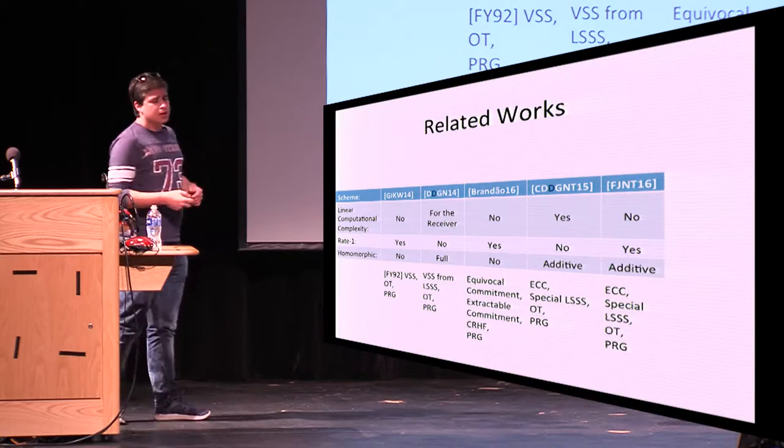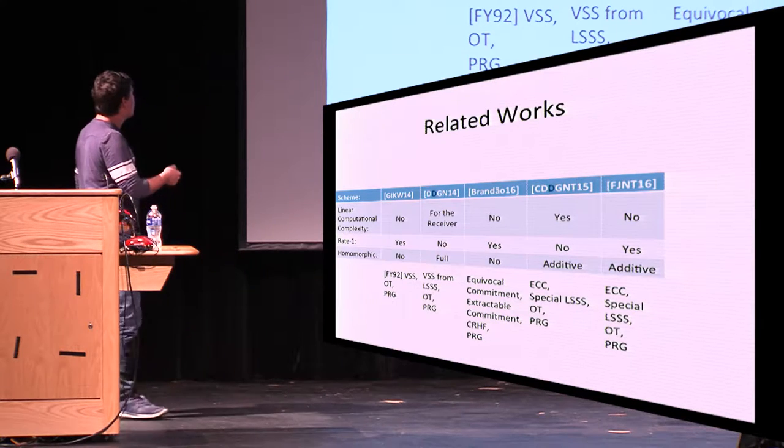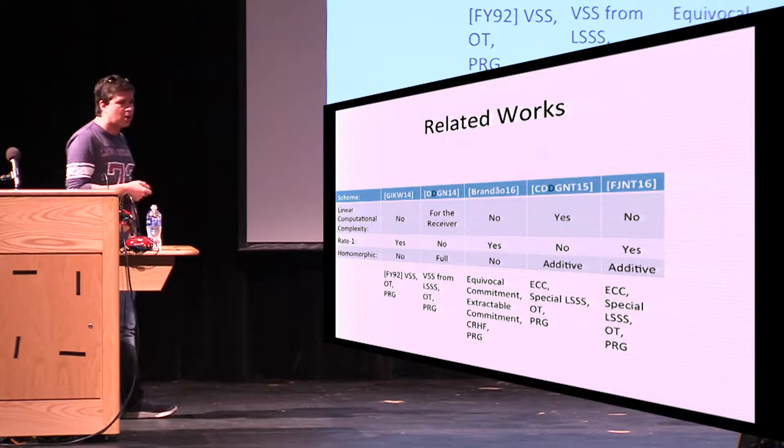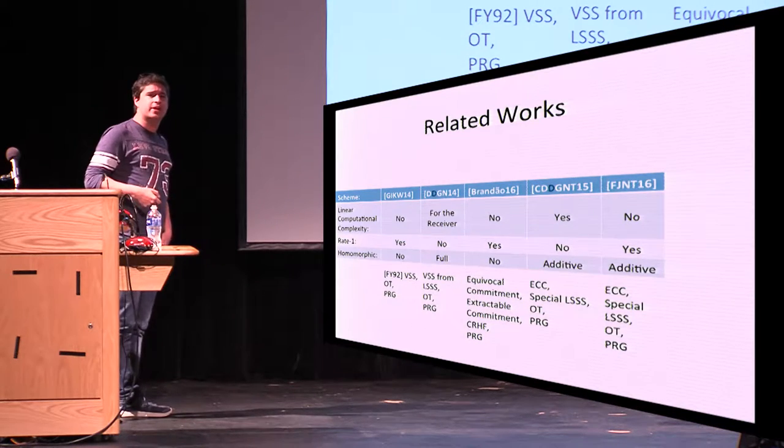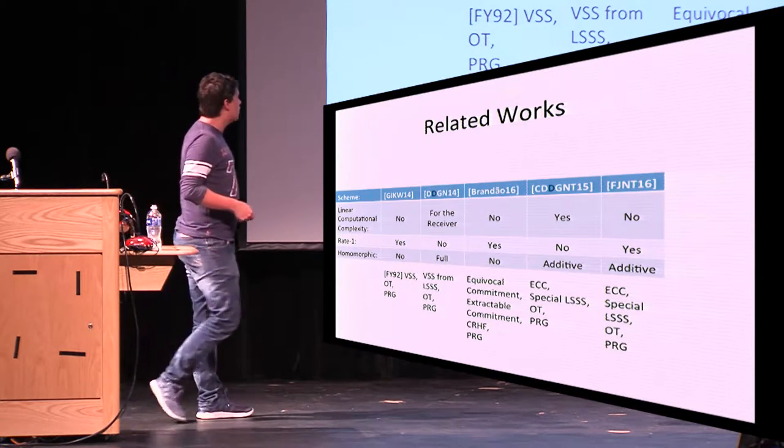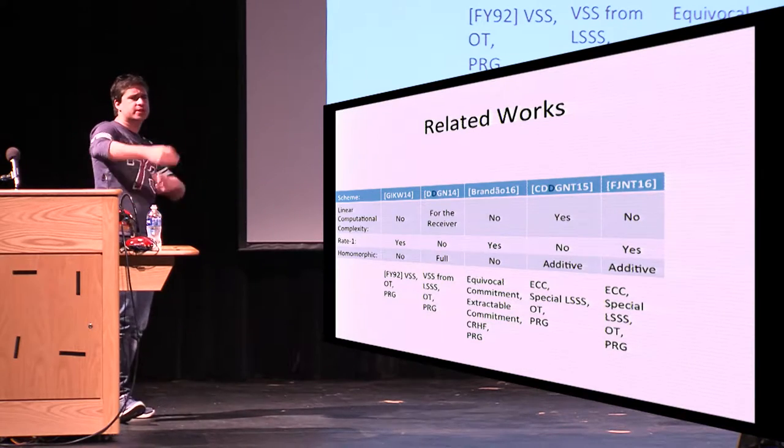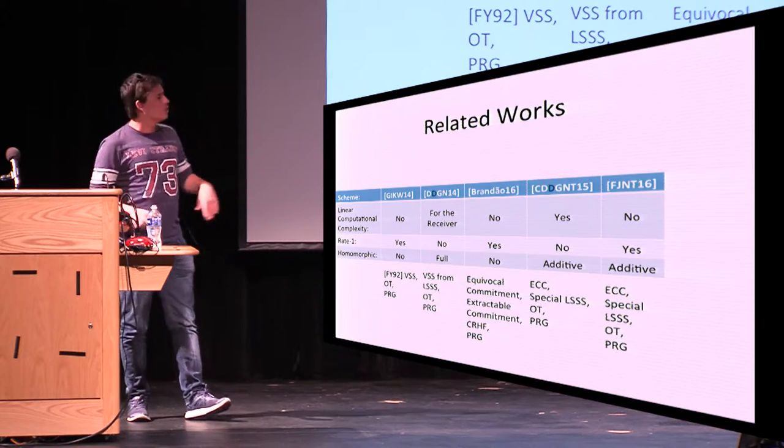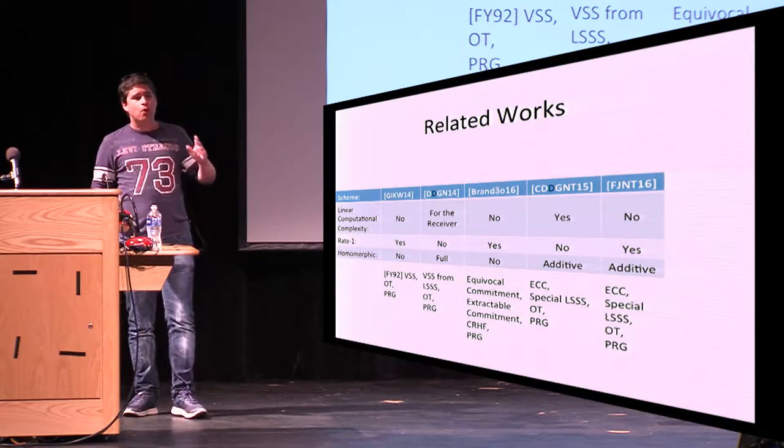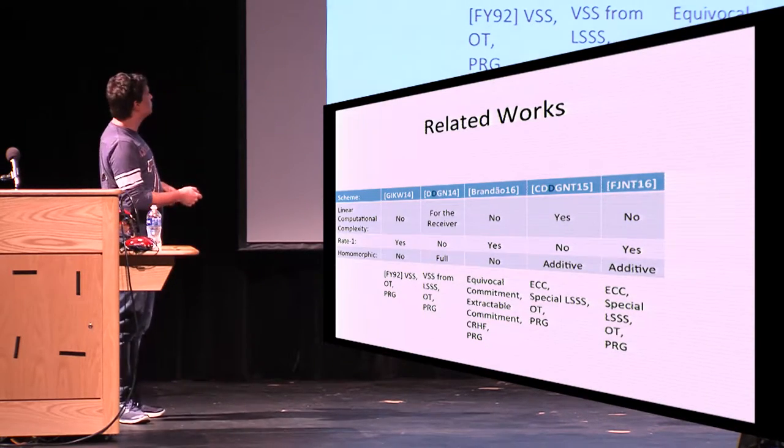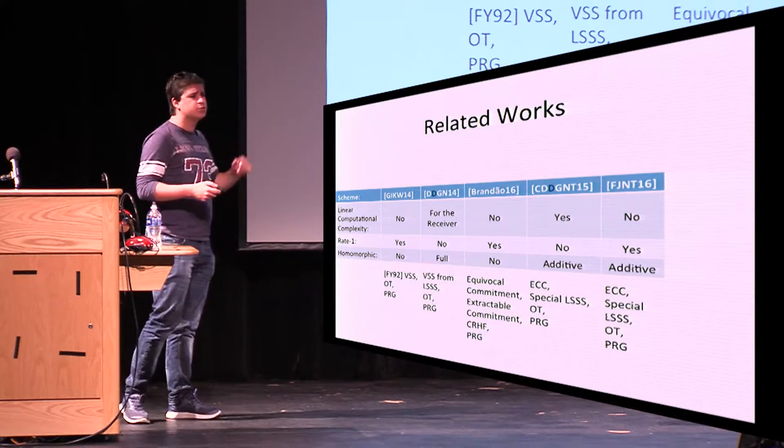On a related note, Brandão showed this year in PKC how to construct similar results to Garay and others, where you have rate one but not the other properties, using different techniques. So Garay and others used VSS, OTs, and pseudorandom generators to construct this primitive, while Brandão started from a standalone equivocal commitment, a standalone extractable commitment, and bound all those together with collision-resistant hash functions and got efficiency through pseudorandom generators. Now, last year, we showed how to get full linear complexity for both of the sender and the receiver, but still, no rate one. And we got only additive homomorphism, not full homomorphism, but at least we got good computational complexity.